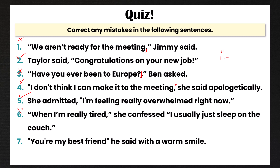Number five is correct. Number six is incorrect — here's a tricky one. 'When I'm really tired,' she confessed, 'I usually just sleep on the couch.' We're missing a punctuation mark after 'confessed.' Do we put a period or a comma? We actually put a comma. 'I usually just sleep on the couch' is an independent clause, but 'when I'm really tired' is a dependent clause that must attach to it. 'When I'm really tired' alone is not a complete sentence, so we can't break this into two sentences — we have to place the speaker tag in the middle separated by two commas.